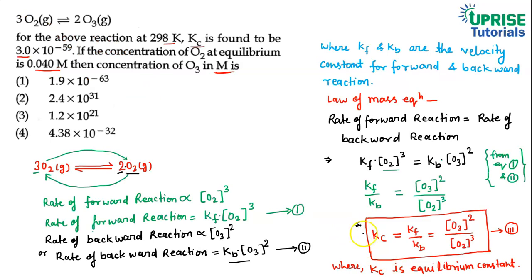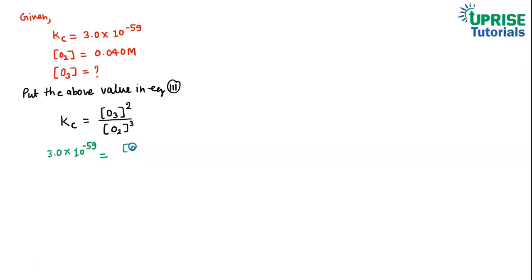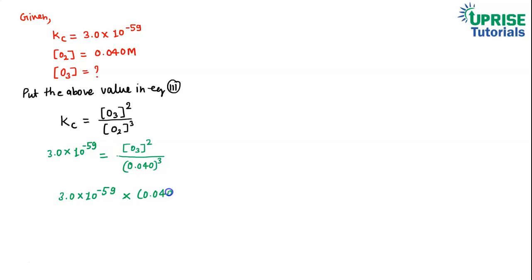Equation 3 is: Kc = [O₃]² / [O₂]³. Substituting values: 3.0 × 10⁻⁵⁹ = [O₃]² / (0.040)³. Rearranging: [O₃]² = 3.0 × 10⁻⁵⁹ × (0.040)³.